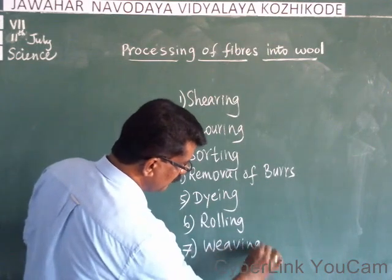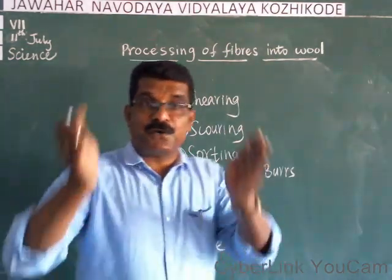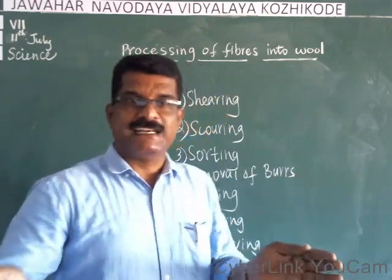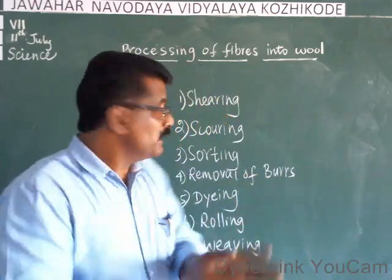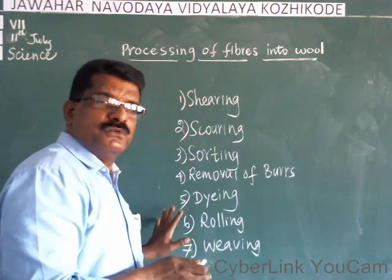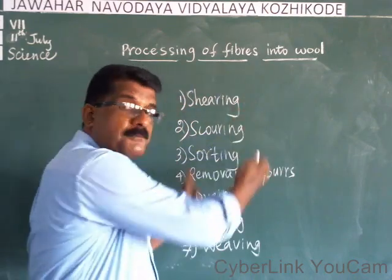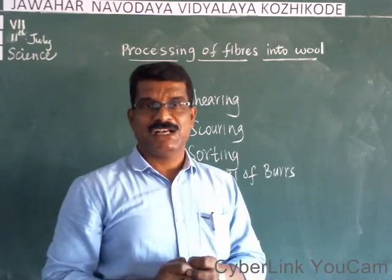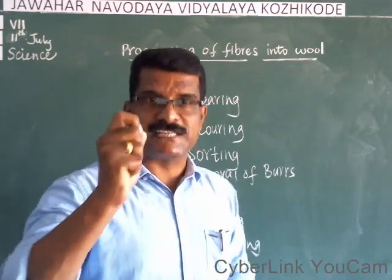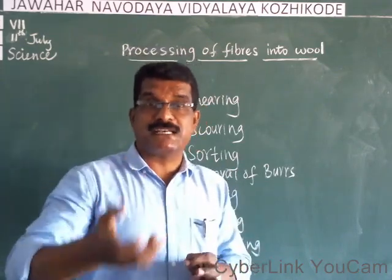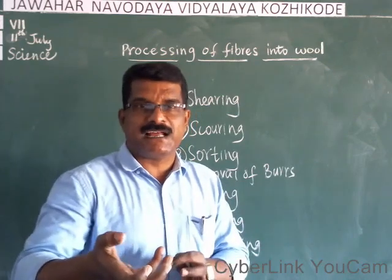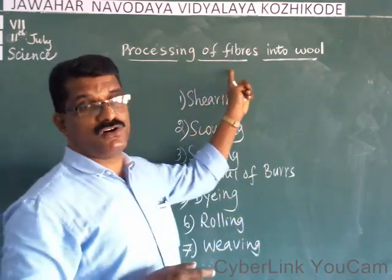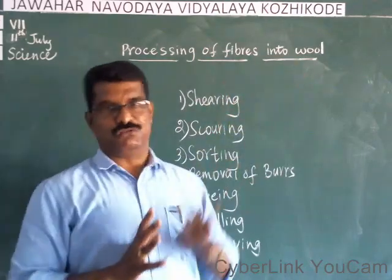The sixth step is rolling into yarn, and the last step is weaving. Before you are going to weave or knit a woolen fabric, we have to undergo all these processes to get a finished product. All these steps together we call the processing of fibers into wool.